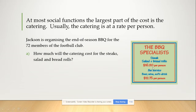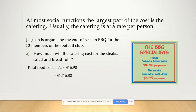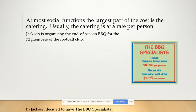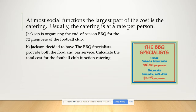It's only this part, so you would take that amount and multiply it by the number of people, which is 72. 72 times $16.90 gives you $1,216.80. Then it says Jackson decided to have the barbecue specialists provide both the food and the bar service — calculate the total cost.